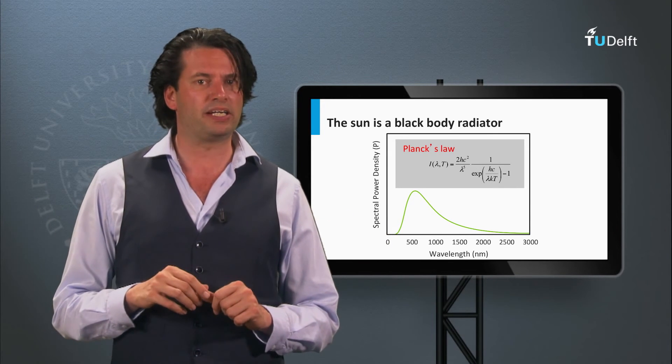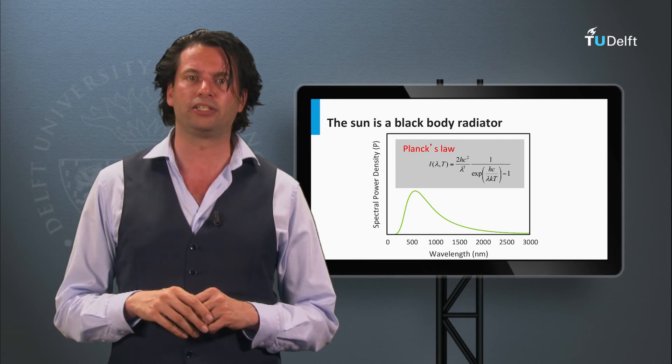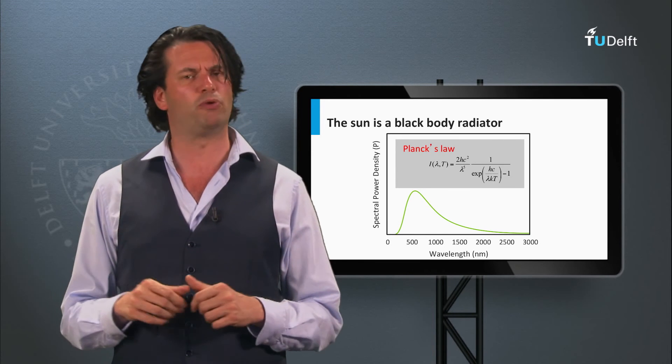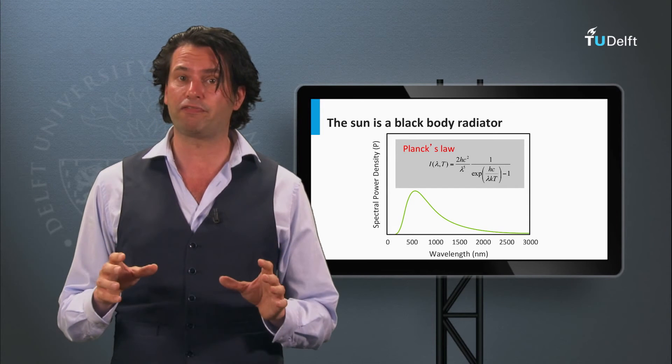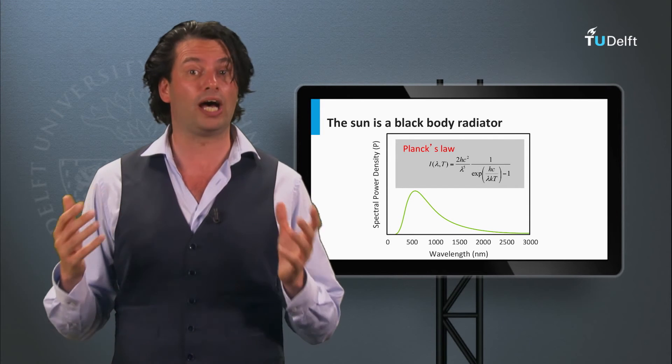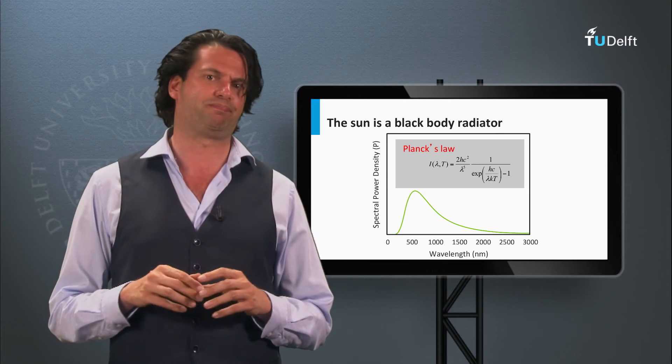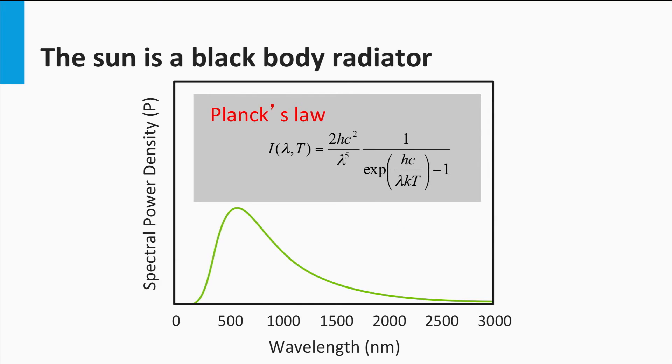All matter emits electromagnetic radiation when its temperature is above absolute zero. A body which is not reflective and absorbs all light is called a black body. The spectral power density of a black body radiator which is in thermal equilibrium is given by Planck's law. This law shows that the spectrum peaks at a certain wavelength when the object is at a certain temperature.